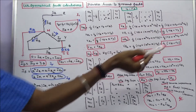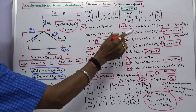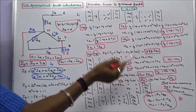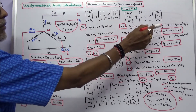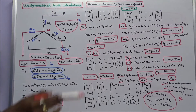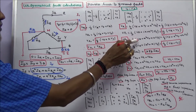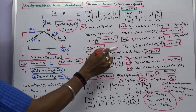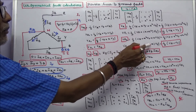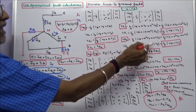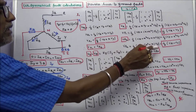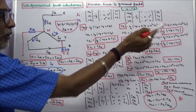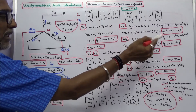Since VB equals VY, VR1 equals 1/3 into (VR plus (A plus A²) into VY). Since A plus A² equals minus 1, VR1 equals 1/3 into (VR minus VY). Similarly, VR2 equals 1/3 into (VR plus (A² plus A) into VY), and since A² plus A equals minus 1, VR2 equals 1/3 into (VR minus VY).